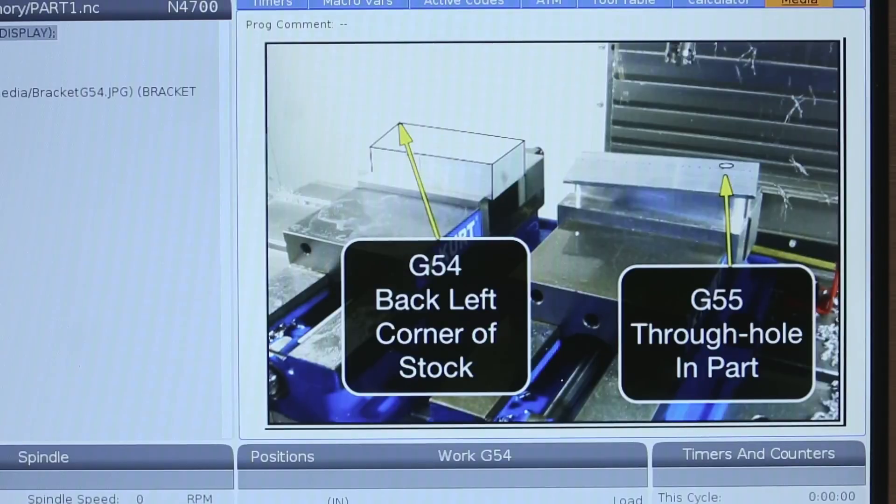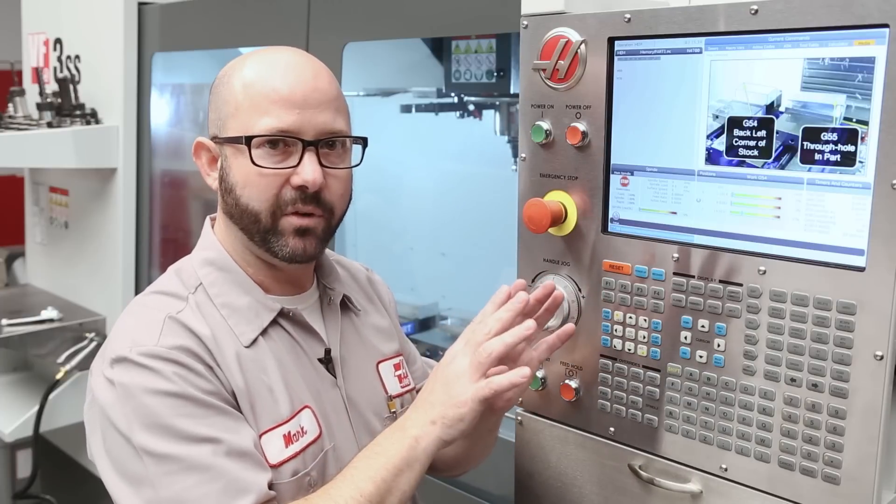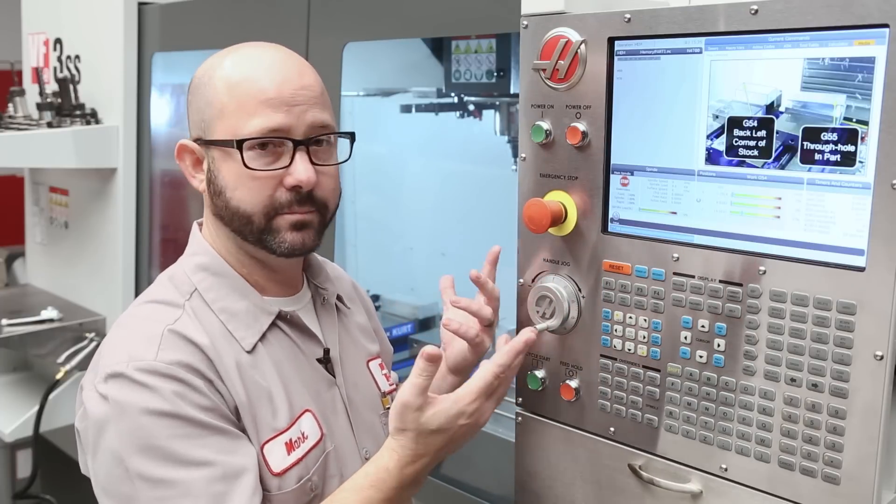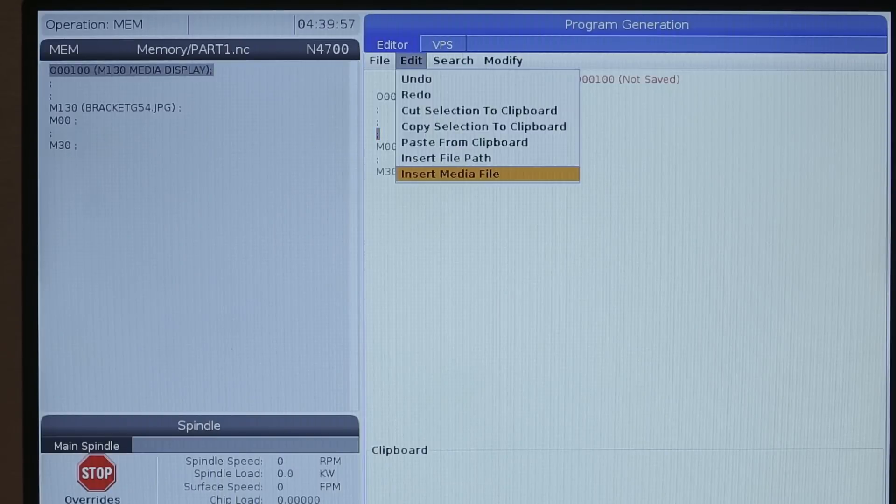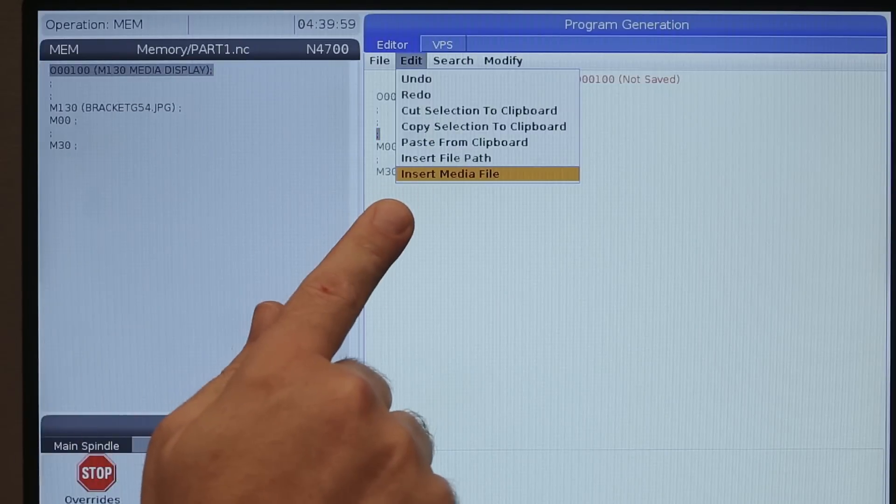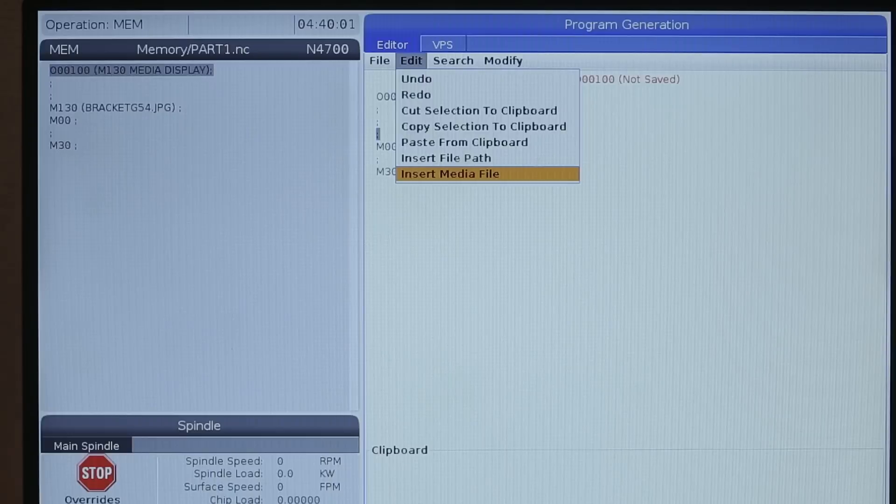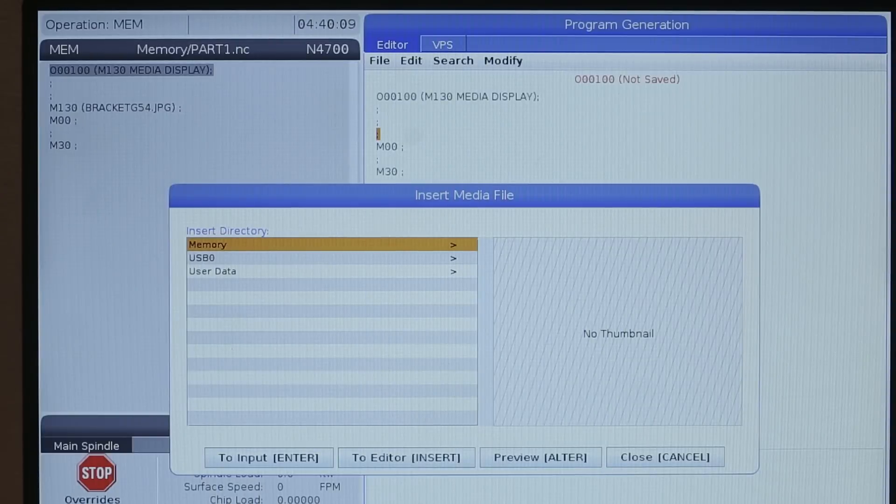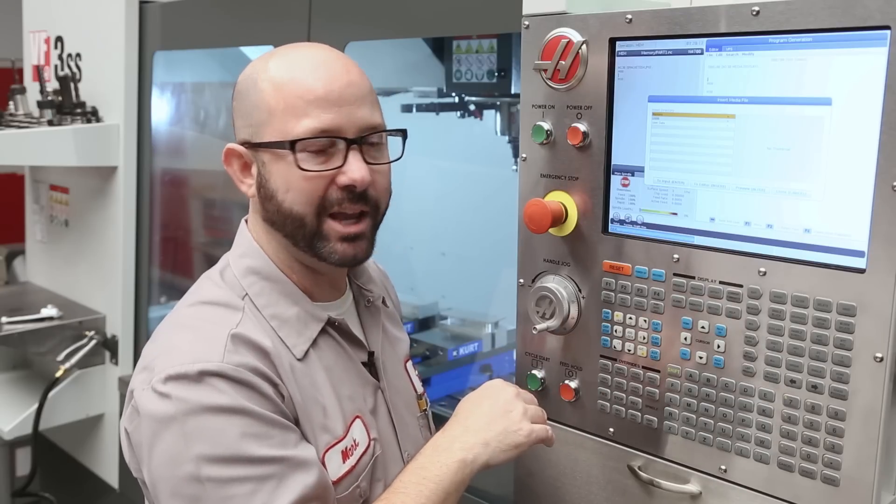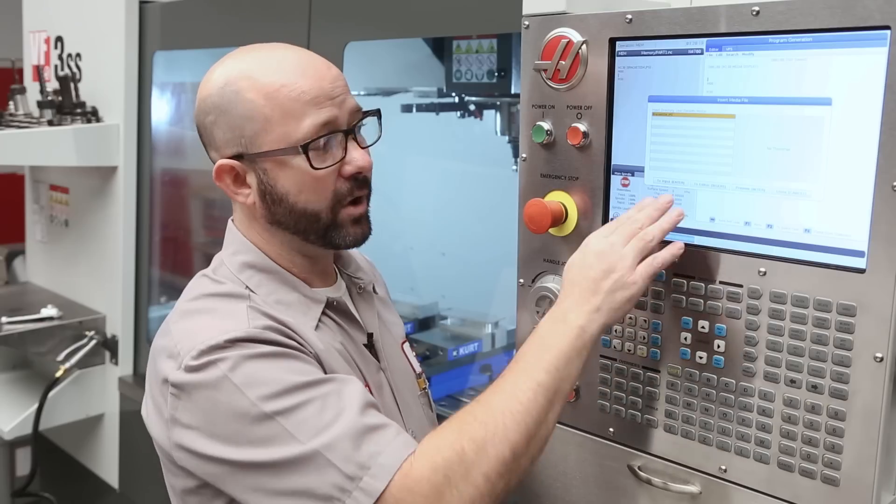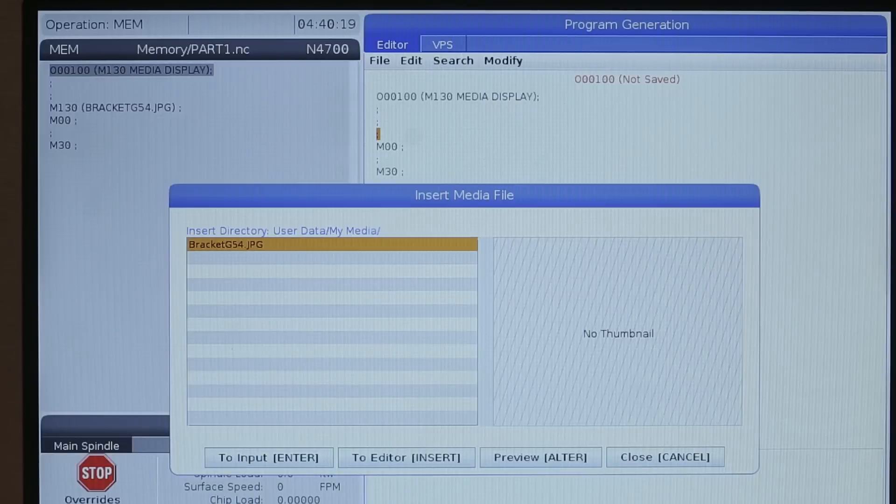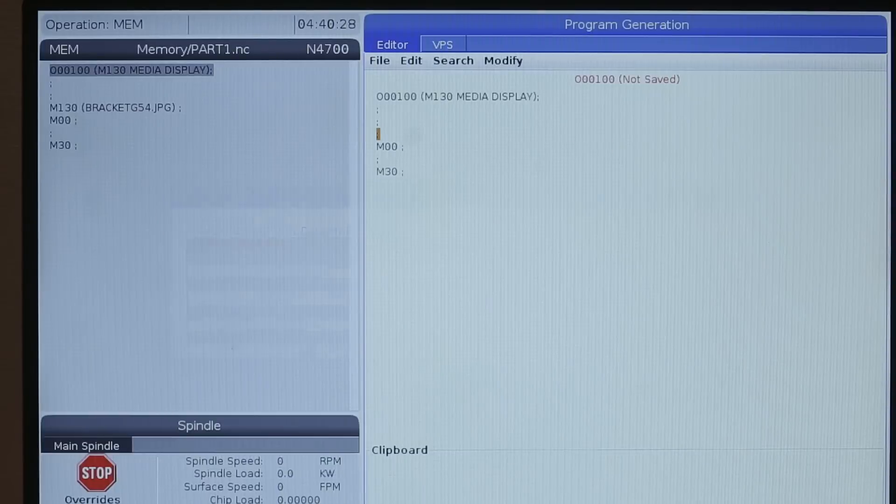There's my file. Okay, now if we wanted to insert that file into our program, that's easy as well. From the editor, all we have to do is press F1 and then navigate to where it says insert media file and press enter. We're gonna go through our navigation tree here, highlight the file we want to display, and follow the on-screen instructions. I'm gonna press insert to insert this file path into my program.